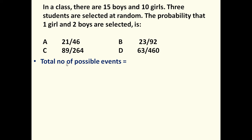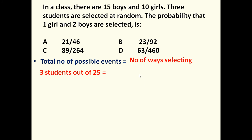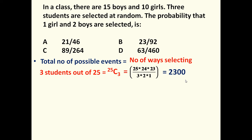To answer this question, first let us determine the total number of possible events. Total 25 students are there — 15 boys and 10 girls. Out of these 25 we have to select 3. The number of ways of selecting 3 students out of 25 is 25C3, which equals 25 × 24 × 23 divided by 3 × 2 × 1, which equals 2300. So there are 2300 different combinations possible.